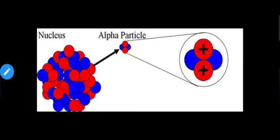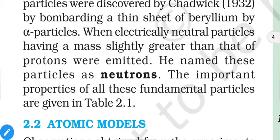Alpha particles contain two neutrons and two protons — they are essentially the nucleus of helium. When electrons are removed from helium, two neutrons and two protons are left. These alpha particles are produced during radioactive activity. When Chadwick bombarded the thin beryllium sheet with alpha particles, electrically neutral particles having slightly more mass than protons were emitted. He named these particles neutrons because they carry no charge.